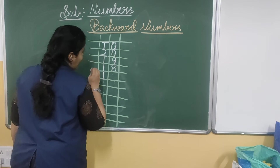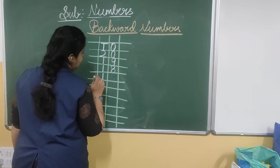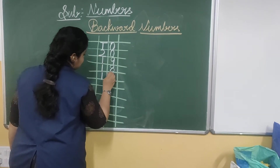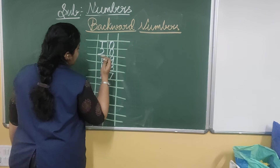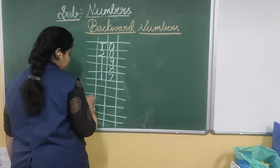Then write 1 under the 10's place — that is 1, meaning 10. And 8 before it is 7. So 18 before is 17.